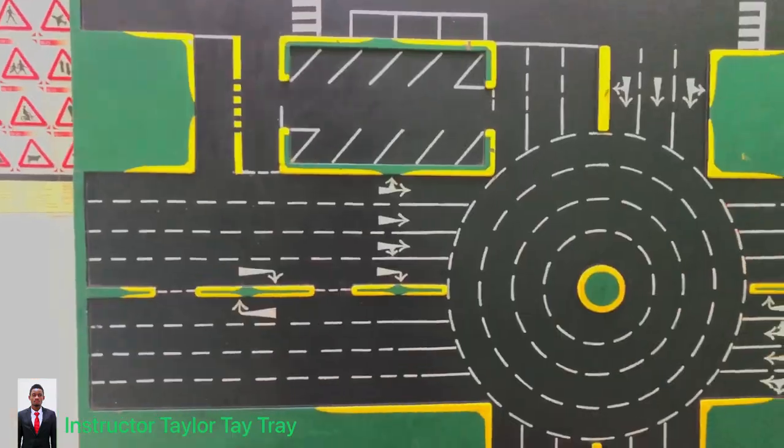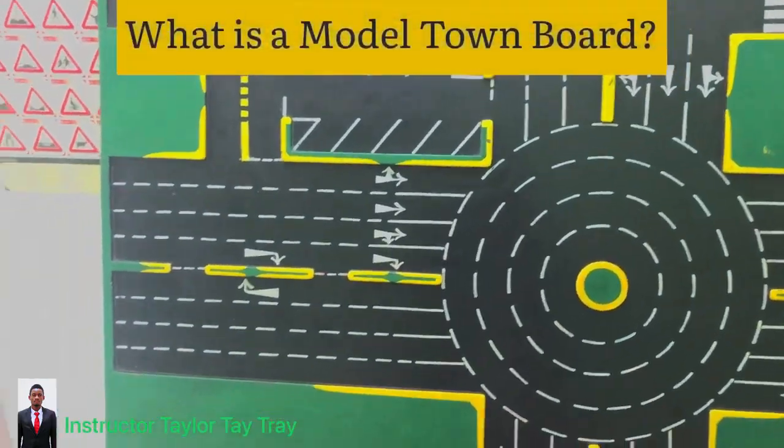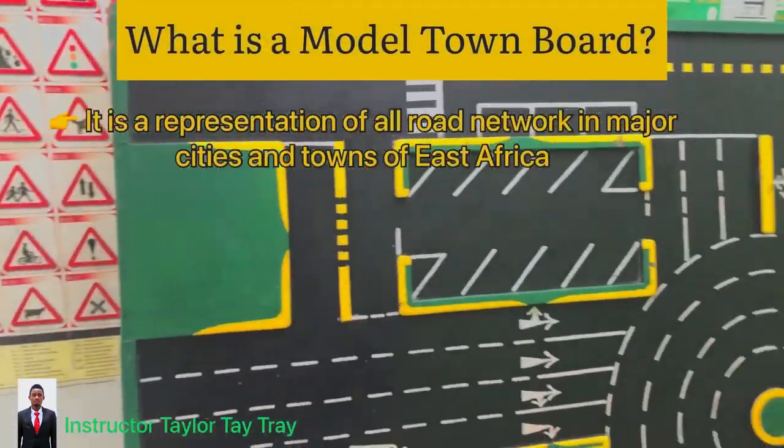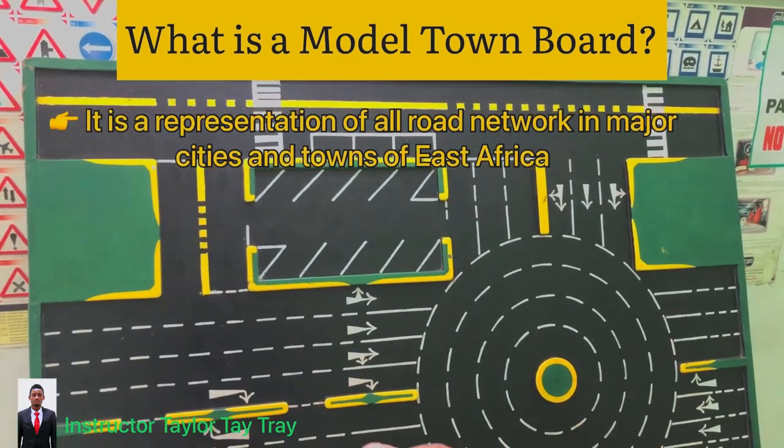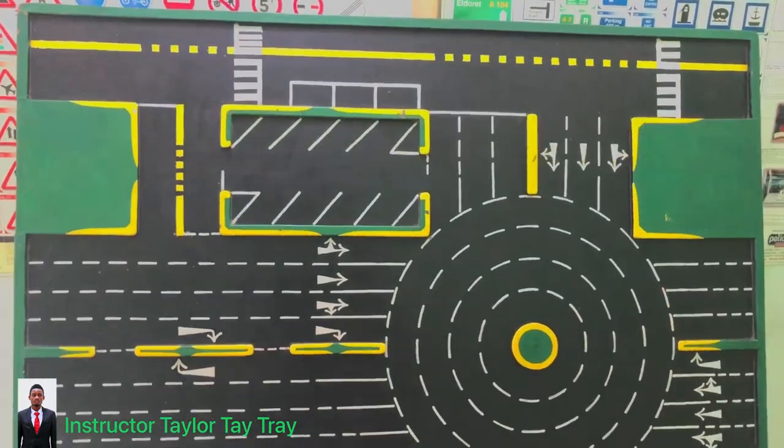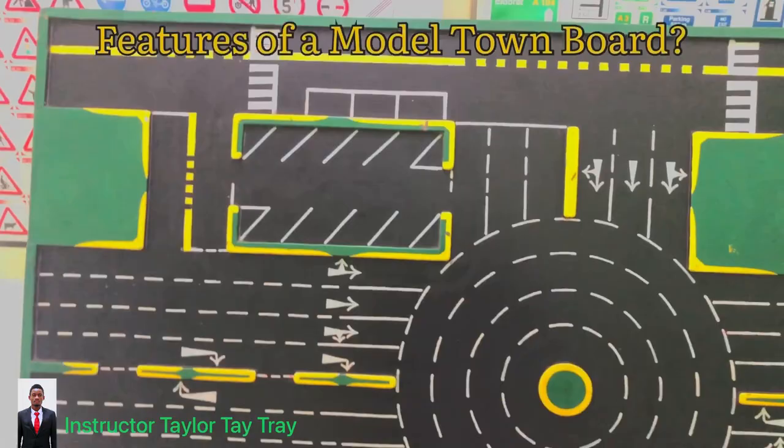What's the model turnboard? A model turnboard is a representation of all road networks in major cities and towns of East Africa. Let's go straight to the features of the model turnboard.